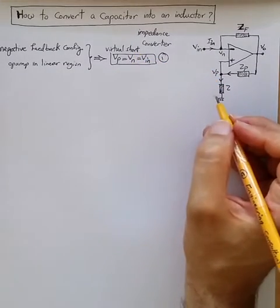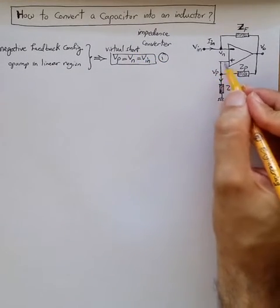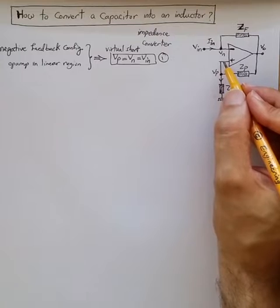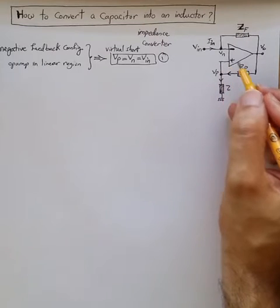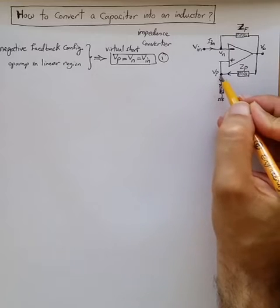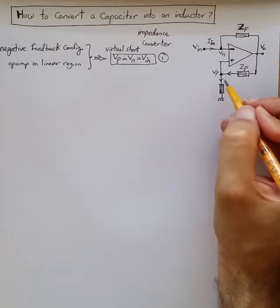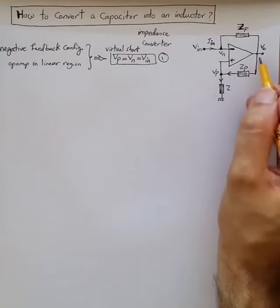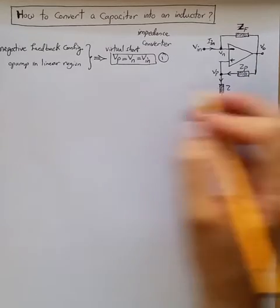Now since no current is flowing or coming out of input terminals because input impedance is infinite or very large, then the whole current going through ZP is equal to the current going through Z, and the relationship between VP and Vout is just the voltage divider between these impedances.